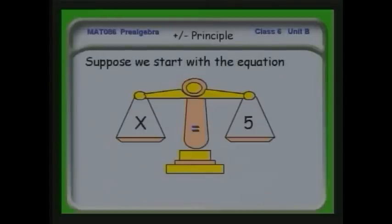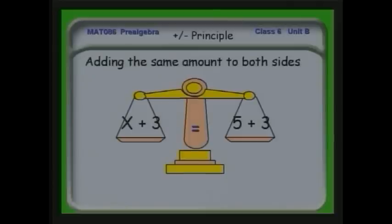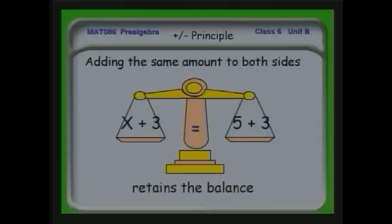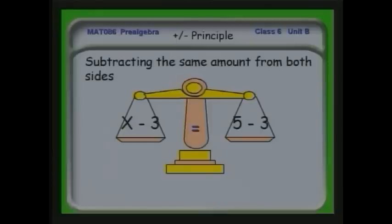Starting with x equals 5: if I add 3 to both sides, I've kept the balance — x plus 3 equals 8. The addition principle says I can do that and be absolutely sure the balance is retained, and x plus 3 equals 5 plus 3 remains mathematically true. Similarly, subtracting 3 from both sides retains the balance. This is what the addition-subtraction principle tells us: you can add or subtract the same thing from both sides without affecting the equation.